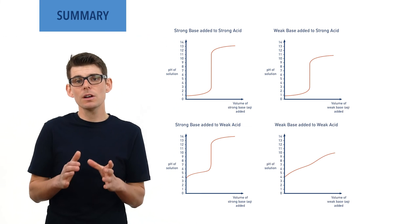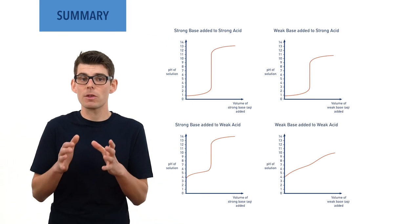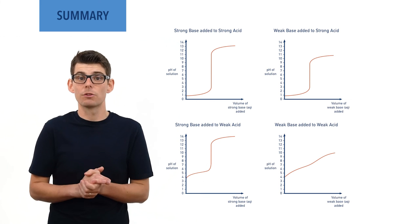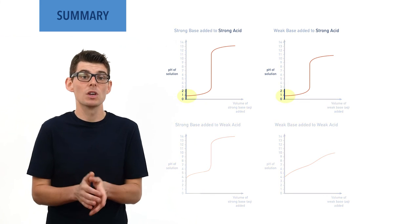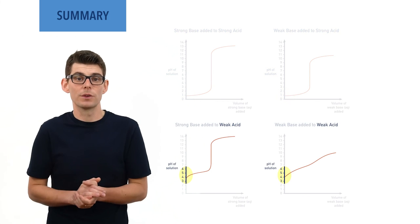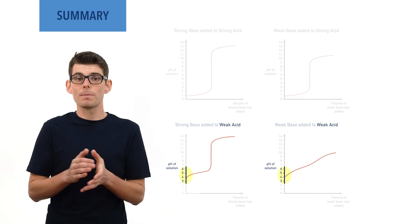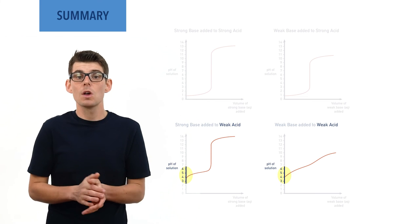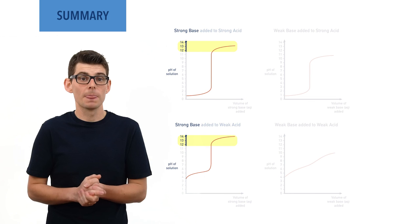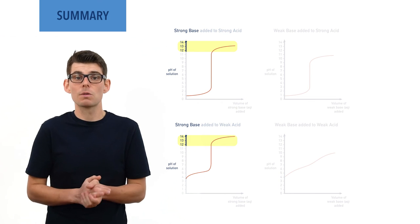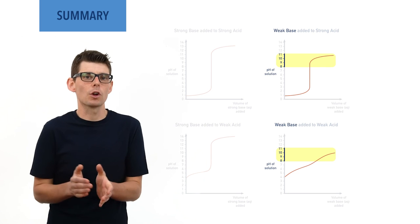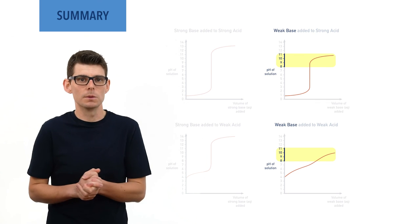The starting and ending pH is based on the type of acid and base being used. Strong acid titrations will start at a lower pH, usually between 0 and 2, than weak acids, usually between 3 and 6. And strong base titrations will finish at a higher pH, usually between 12 and 14, compared to when a weak base is used, usually between 8 and 11. All depending on the concentrations of acid and base used.